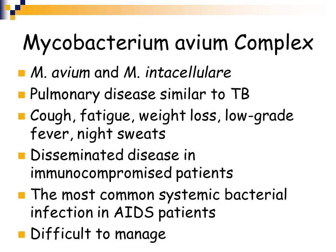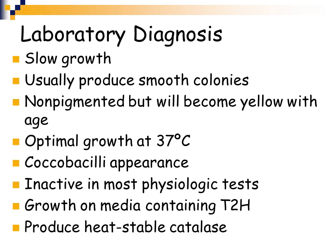Mycobacterium tuberculosis and MAC infections are very common in AIDS patients, and MAC infections can be very difficult to manage. In the laboratory, like mycobacterium tuberculosis, these are slow growers. Mycobacterium tuberculosis produces rough dry colonies, but the MAC organisms produce smooth colonies. They are non-pigmented but will turn yellow as they age. They optimally grow at body temperature. They are very small, short rods. They are inactive in most physiologic tests. They will grow on media containing T2H and produce a heat-stable catalase.